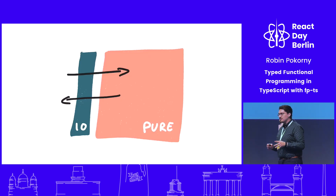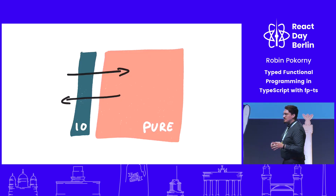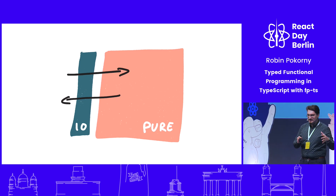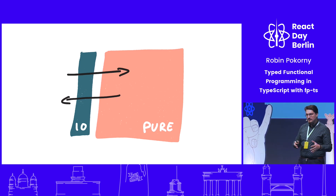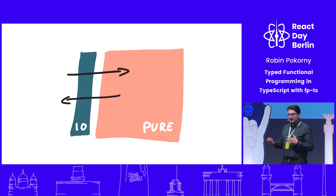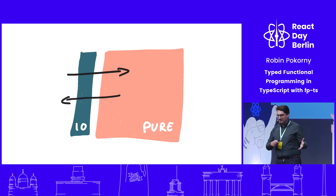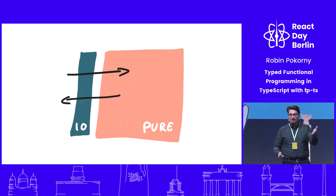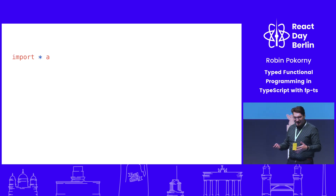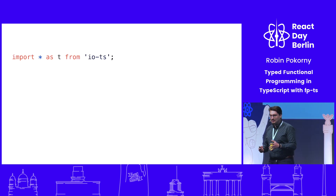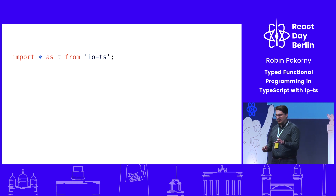In functional programming, we usually distinguish between the ugly world outside and the beautiful, pure world inside. And on the border, we have this border patrol, and it's called IO — input-output. It makes sure that we translate the ugly things to the nice things nicely. There is a library called io-ts, and we can use that to create something called a branded type.